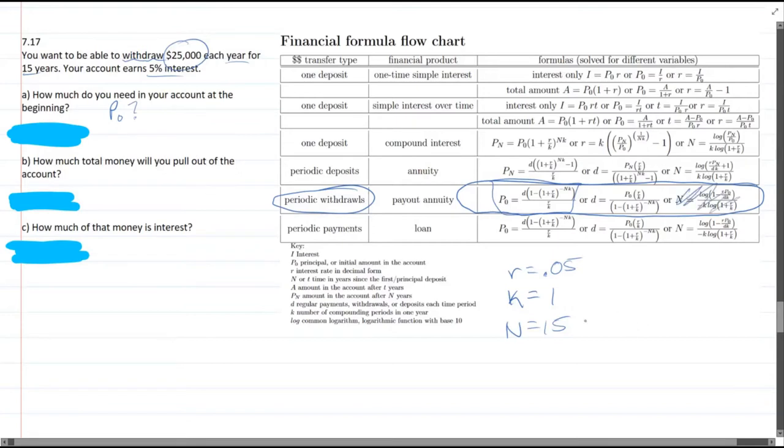We're not using the N or the D because the N formula tells us time. The D formula tells us deposit per, or I guess that would be monthly withdrawal, but we already know that. We want to know the initial amount. So let's write the formula: P0 equals D times 1 minus parenthesis 1 plus R over K to the negative NK, close parenthesis, divided by R over K.